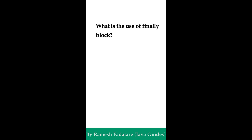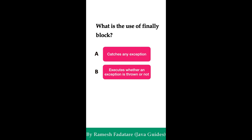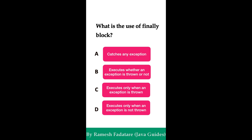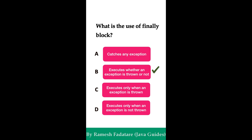Welcome to Java Quiz Series. Here is one more question: what is the use of the finally block? Option A: it catches any exception. Option B: it executes whether an exception is thrown or not. Option C: it executes only when an exception is thrown. Option D: it executes only when an exception is not thrown. You have five seconds to answer this question. The correct answer is Option B: it always executes whether an exception is thrown or not.